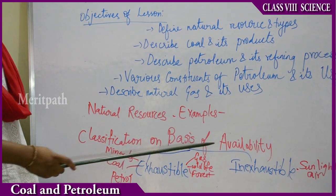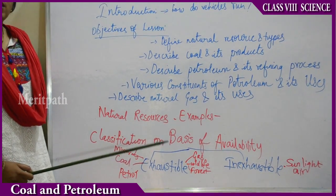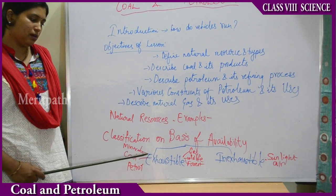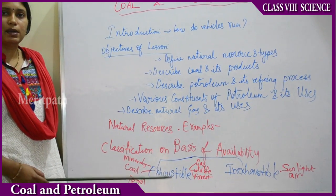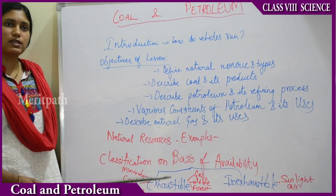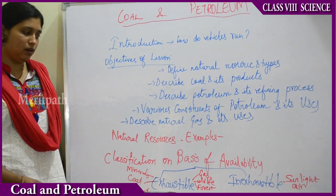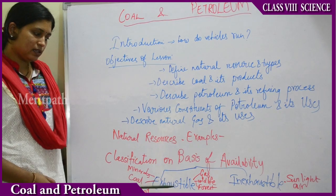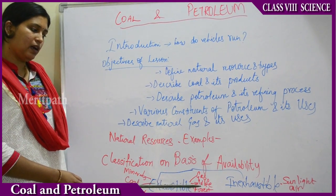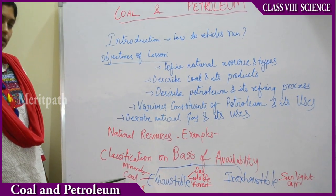On the basis of availability, natural resources are of two types: exhaustible and inexhaustible. Exhaustible resources are always limited and can get exhausted at any time. Examples include gas, wildlife, forests, petrol, minerals, and coal.